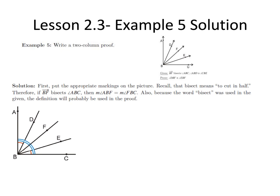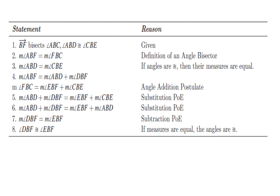In addition, we were given that angle ABD is congruent to, or has the same measure as, angle CBE. Statement 1 is the given statement: Ray BF bisects angle ABC and angle ABD equals angle CBE.